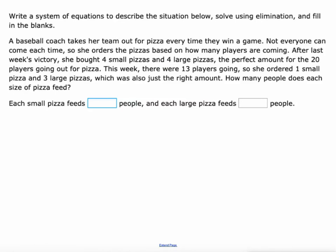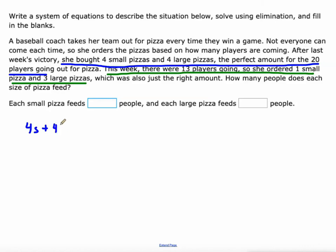One more. A baseball coach takes her team out for pizza every time they win a game. Not everyone can come every time, so she orders pizzas based on how many players are coming. After last week's victory, she bought four small and four large pizzas, the perfect amount for twenty players. This week there were thirteen players, so she ordered one small and three large pizzas. So 4S + 4L = 20 and S + 3L = 13.